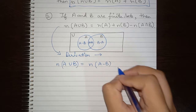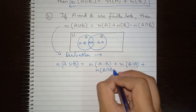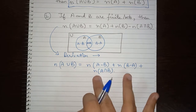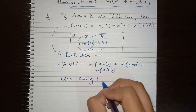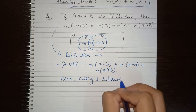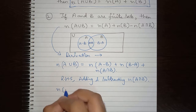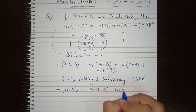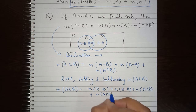Now let's open up the union and see what happens for three sets. When we expand A union B union C, we get: number of elements in A, plus number of elements in B, plus number of elements in C, minus number of elements in B intersection C, minus number of elements in A intersection (B union C). To simplify the last term, we apply the Distributive Law.